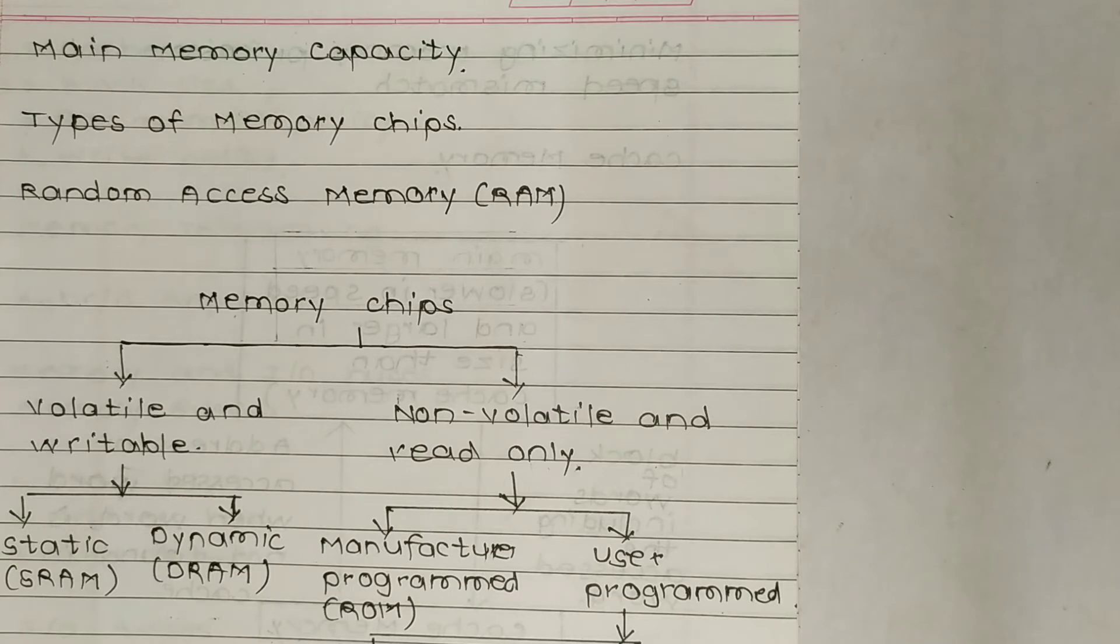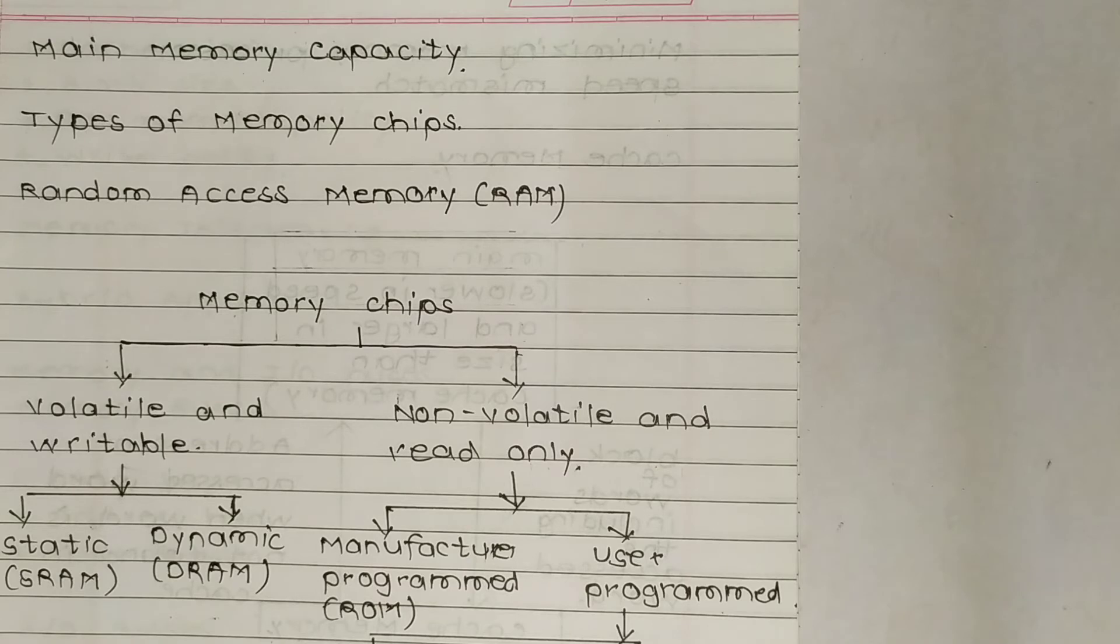Notice that 1 KB is about 10 raised to 3 bytes, 1 MB is about 10 raised to 6 bytes, and 1 GB is about 10 raised to 9 bytes. Hence the origin of prefixes: kilo (thousand), mega (million), and giga (billion).